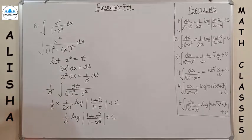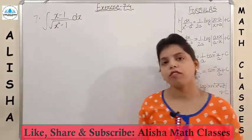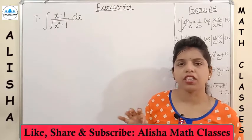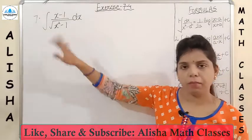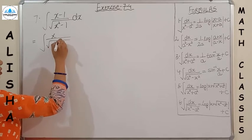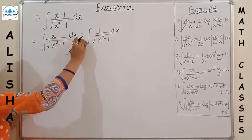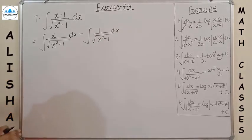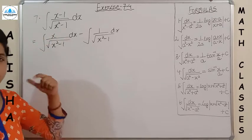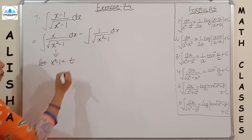Question 7: integration of (x − 1)/√(x² − 1). This is of the form linear upon root quadratic. Using the easy method of splitting terms, it becomes ∫ x/√(x² − 1) dx − ∫ 1/√(x² − 1) dx. In the first integral, the numerator contains the derivative of the function inside the square root.